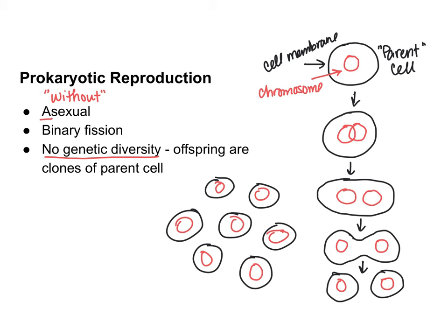In a stable environment it's fine, because these cells are obviously well-evolved to survive in that environment and they're reproducing. But if environmental conditions change and become stressful, the lack of genetic diversity can actually be a detriment — because if something happens that these bacteria are susceptible to,